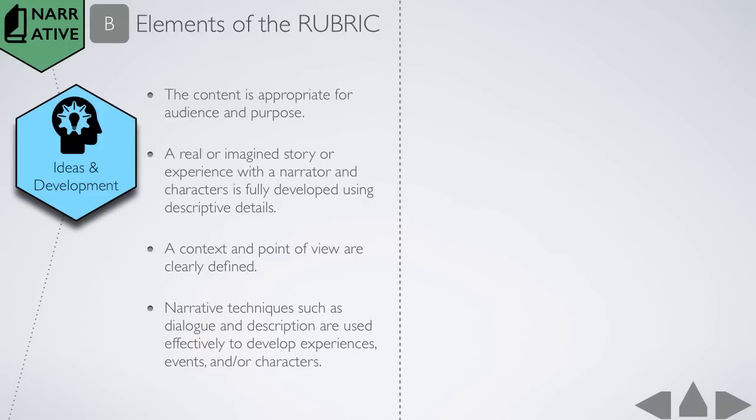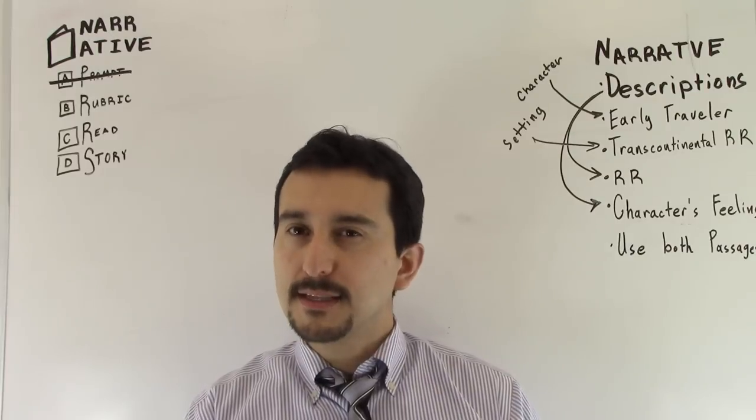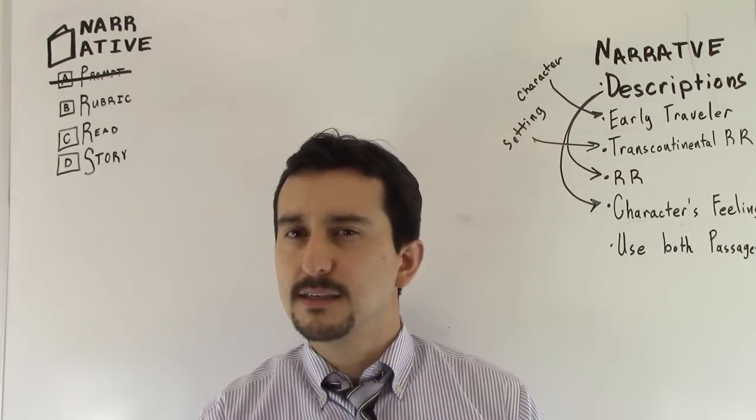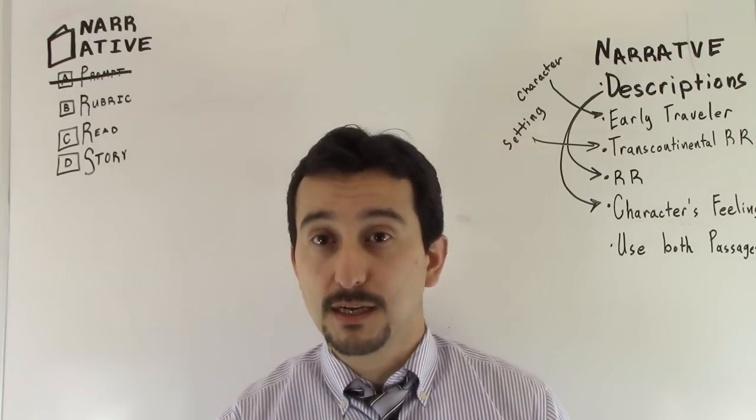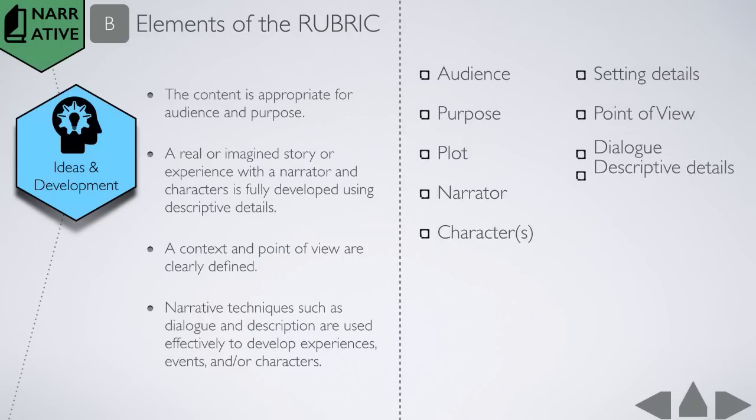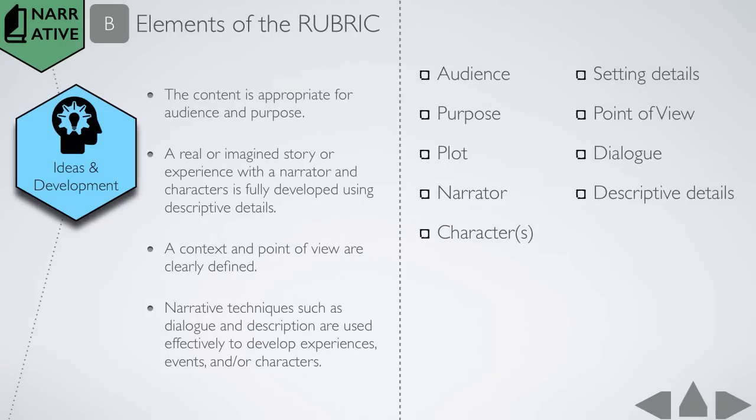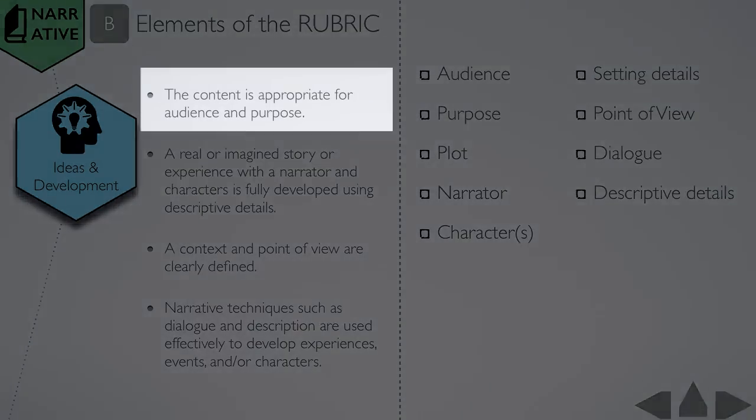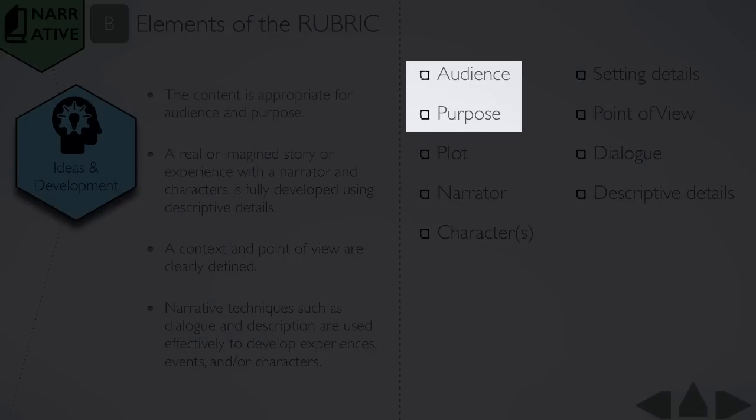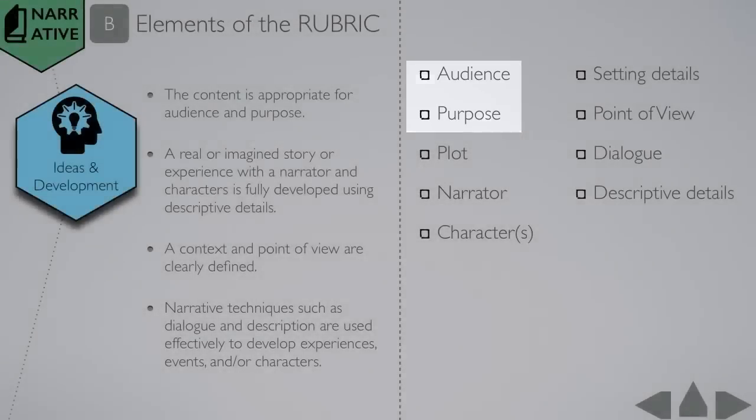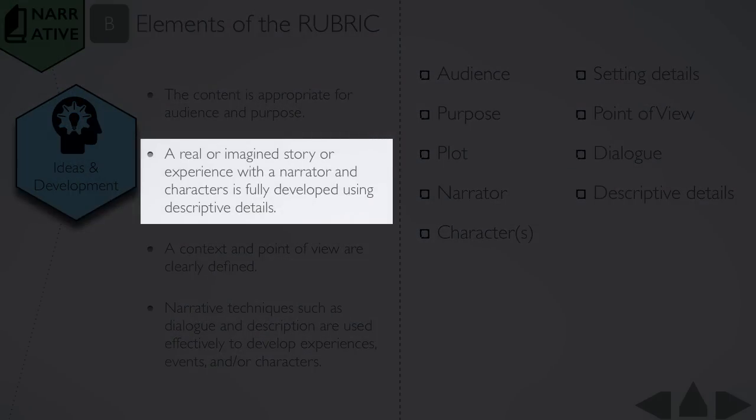So here we have it listed here. There's four bullet points in order to score a four, which is the top score for narrative, and that's nice, but we also want to translate this into student-friendly terms so students are very clear on what's expected of themselves too, right? So just made a list out of some of the concepts here, going through and breaking it down. The content is appropriate for audience and purpose, so we got audience and purpose as a bullet point that's something we need to discuss extensively with our students.